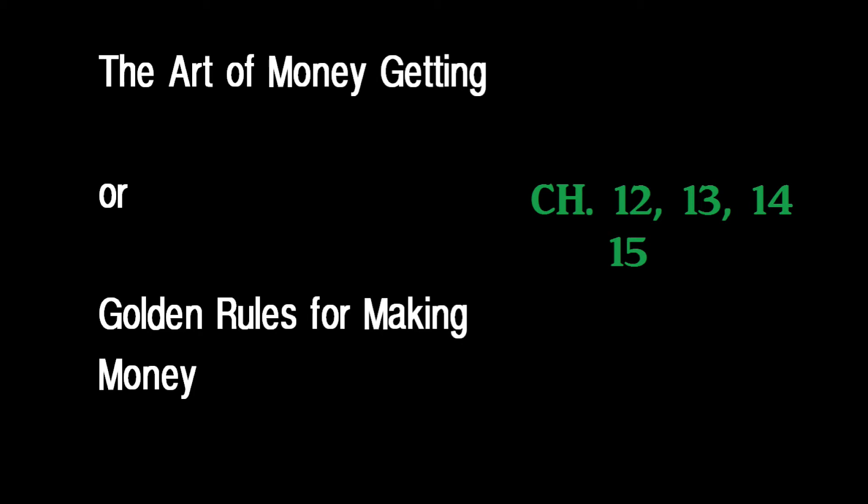Chapter 12: Be Systematic. Men should be systematic in their business. A person who does business by rule, having a time and place for everything, doing his work promptly, will accomplish twice as much and with half the trouble as him who does it carelessly and slipshod. By introducing system into all your transactions, doing one thing at a time, always meeting appointments with punctuality, you find leisure for pastime and recreation.